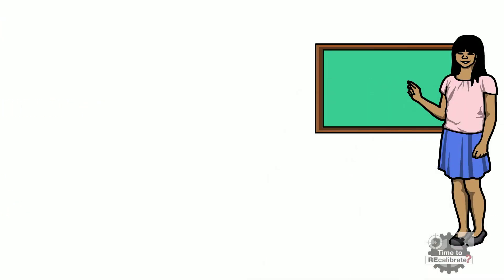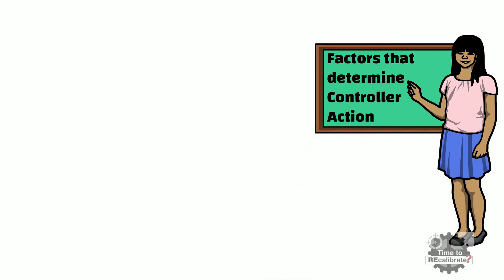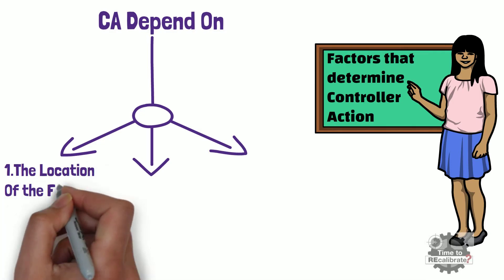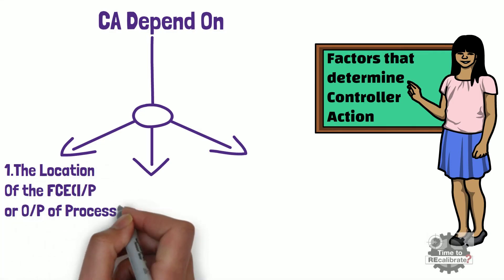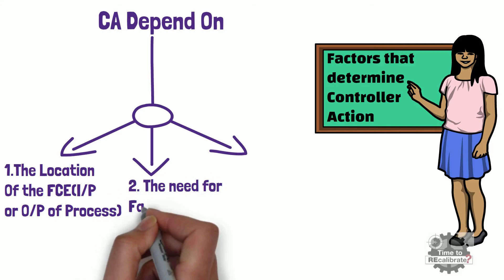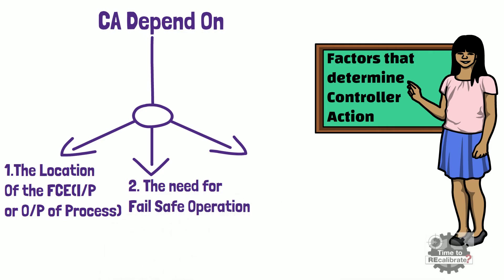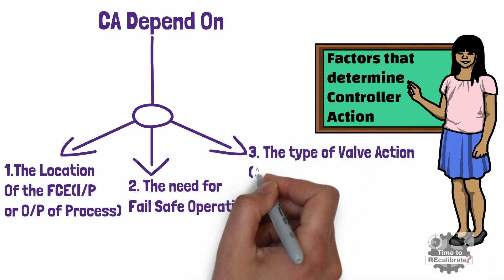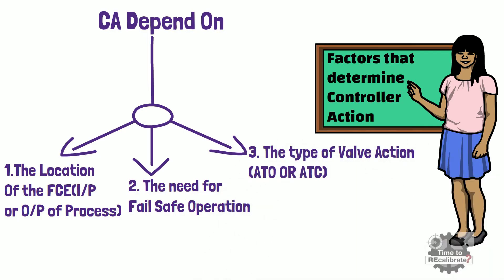Now let's learn about the factors that determine controller action. First, controller action depends on the location of the flow control element — specifically, whether the flow control valve is located at the input side of the process or at the output side. Secondly, controller action also depends on the need for fail-safe operation. Last but not least, controller action also depends on the type of valve action — for example, whether the valve is air-to-open or air-to-close.